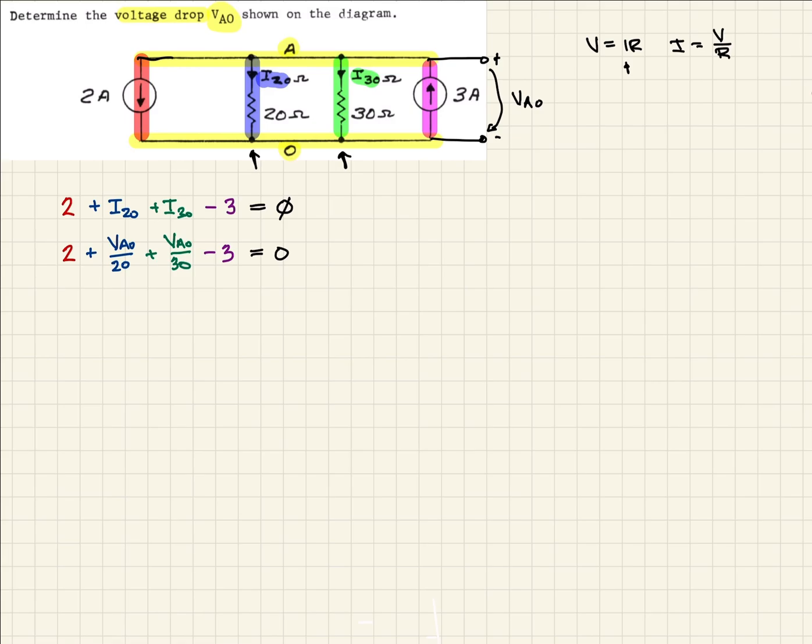We should be able to solve this for VAO. The first thing we note is the constants. We're going to subtract 2 and add 3 to both sides. When we do, we get VAO over 20 plus VAO over 30, and that should be equal to 1.